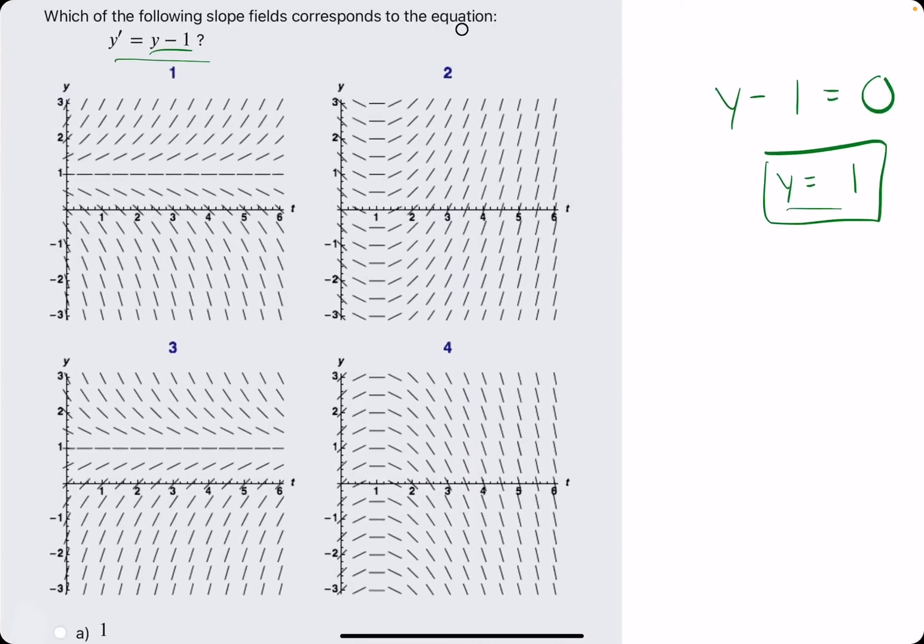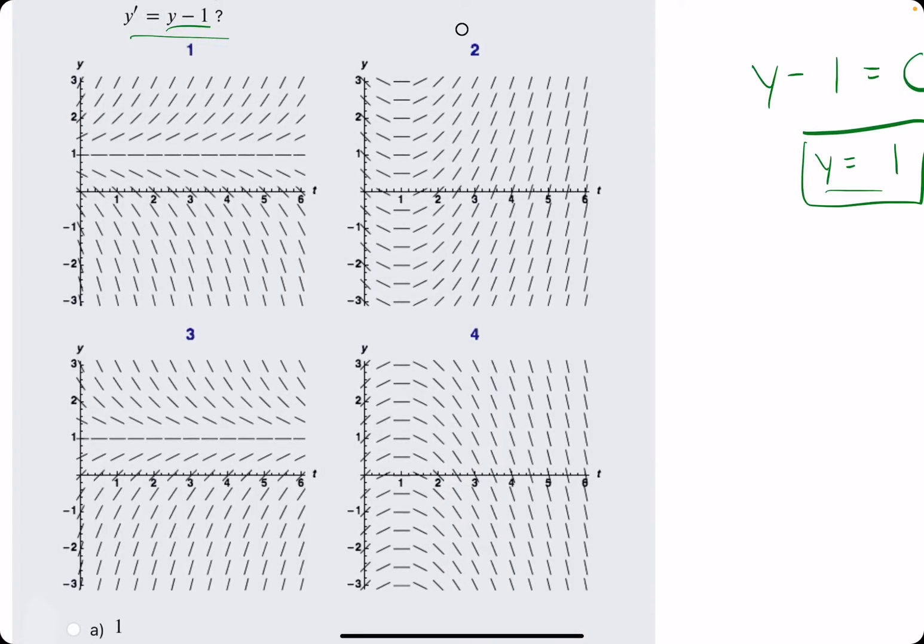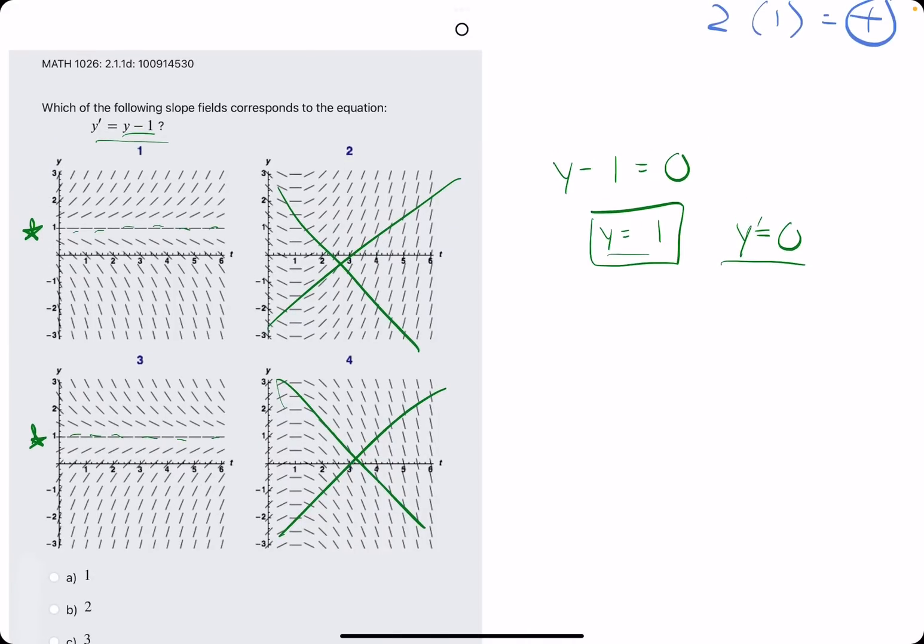Looking at these options, which slope fields have 0 slopes at y = 1? Graph 1 and graph 3 have 0 slopes because we can see this dashed line across y = 1, but 2 and 4 do not have that behavior. So it's narrowed down to 1 and 3.